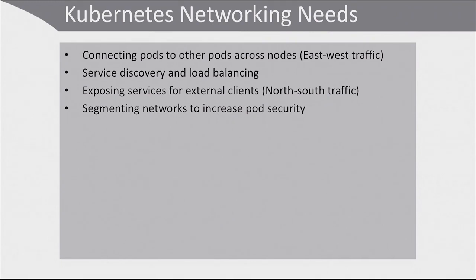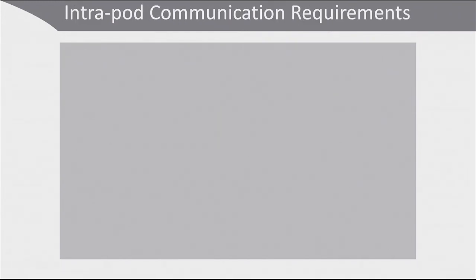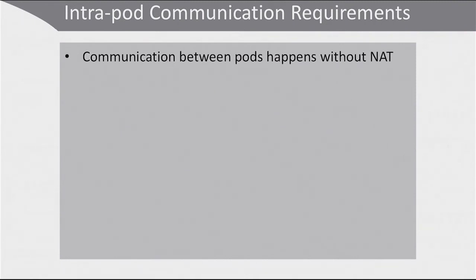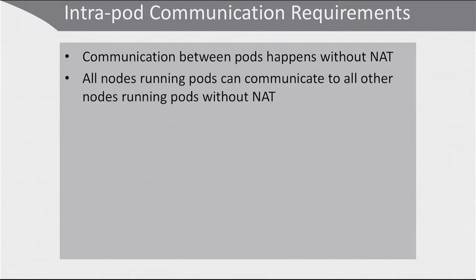All of these needs have different requirements for networking. For intra-pod communication, the challenge is that communication between pods happens without NAT. NAT is network address translation, and network address translation means that what is happening within a pod goes through a network address translator. Network address translation for intra-pod communication is bad — you cannot have any NAT. This imposes the requirement that all nodes running pods can communicate to all other nodes running pods without NAT, with the exception of traffic coming into the pod.